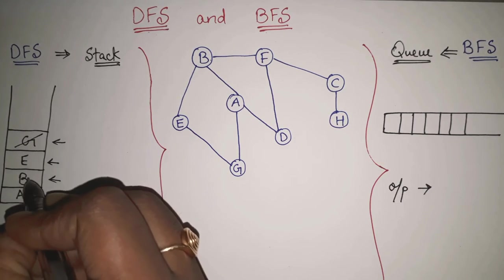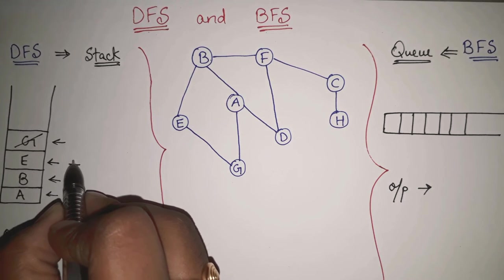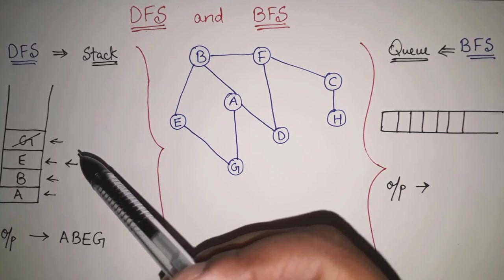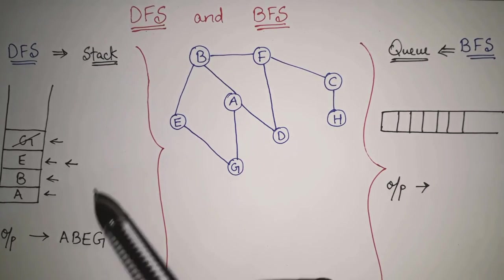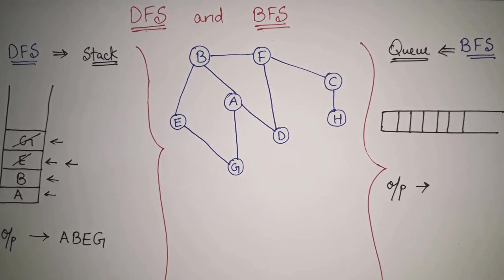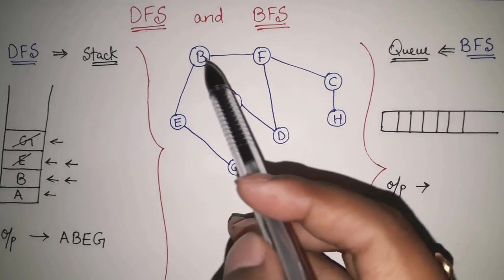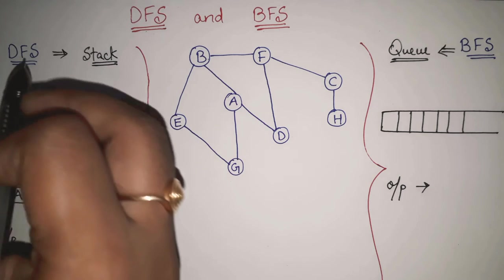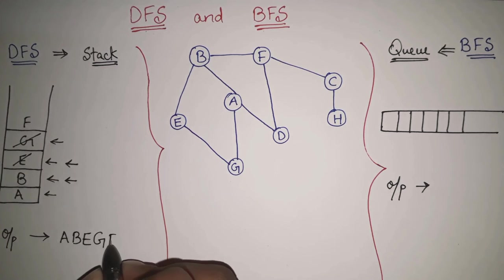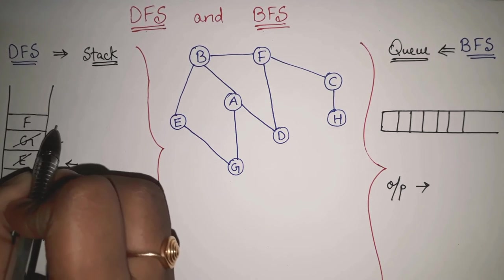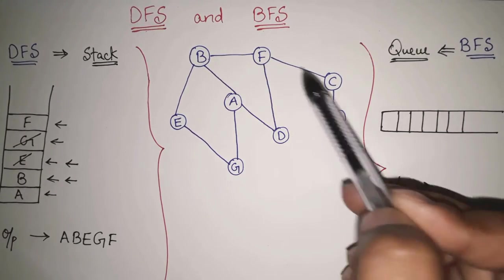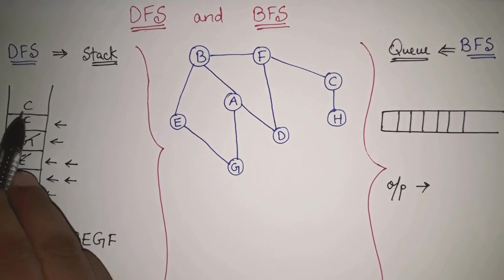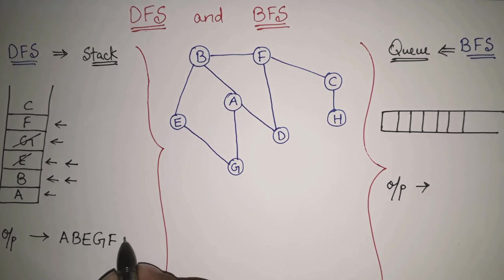Now the top of the stack comes back to E. I will go to E and see its directly connected nodes: B and G. B and G are both already in my output, so all nodes from E are also visited — I will pop E. Now the top of the stack is B. From B, the directly connected nodes are A, E, and F. A and E are already there, but F is not. So I will push F in the stack as well as write it in my output.